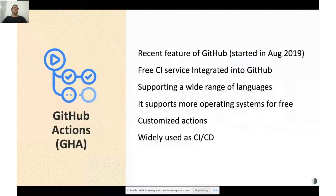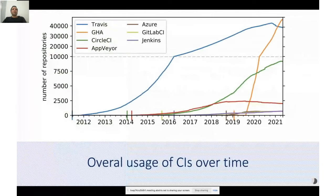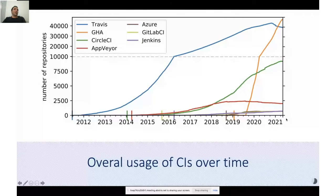GitHub Actions is a free CI service integrated to GitHub. It supports free CI and makes it possible to create custom actions, providing a marketplace of more than 10,000 actions. It is mostly used as a CI/CD tool. The main advantage of using Actions is that it's easy to use and integrated directly into GitHub. We observed something happened in this figure after the introduction of Actions.